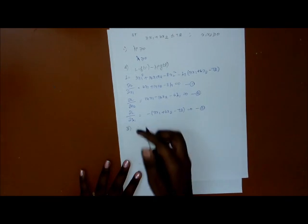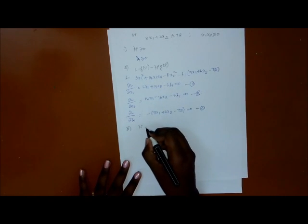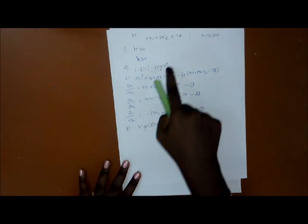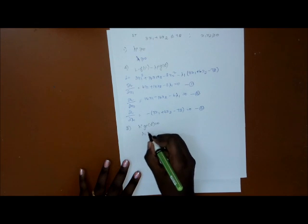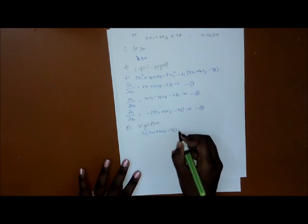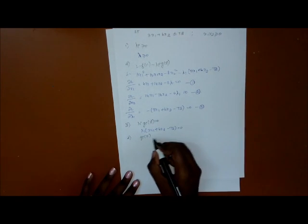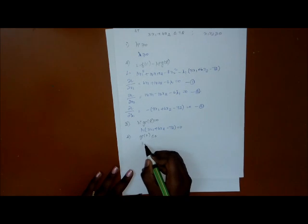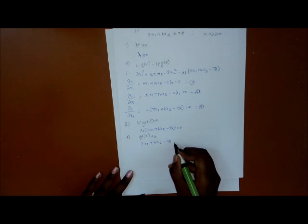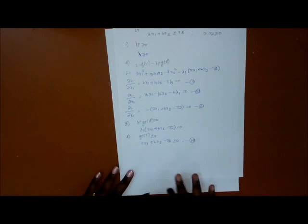The third KKT condition is λᵢ·g(x) = 0. Since we have only one constraint, λ₁(3x₁ plus 6x₂ minus 72) = 0. The fourth condition is gᵢ(x) ≤ 0, which is the single constraint: 3x₁ plus 6x₂ minus 72 = 0. That is the fourth equation.